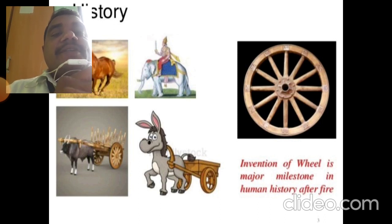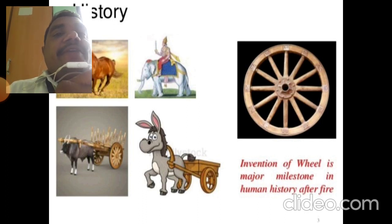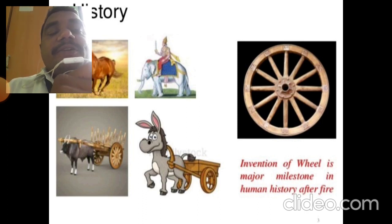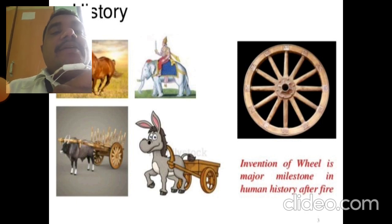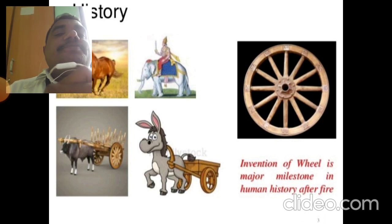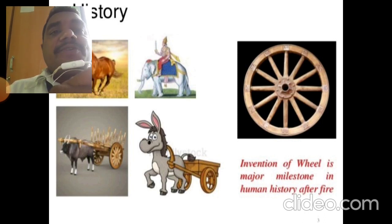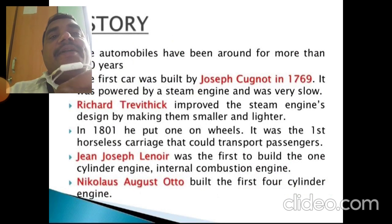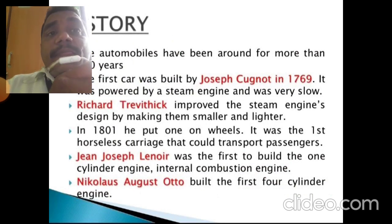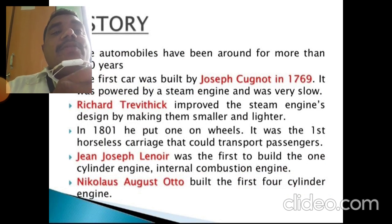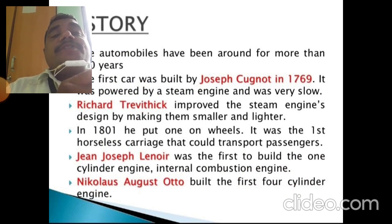Before motorized vehicles, transportation was done with the help of different animals — horses, buffaloes, and elephants. Automobiles have been around for more than 300 years.